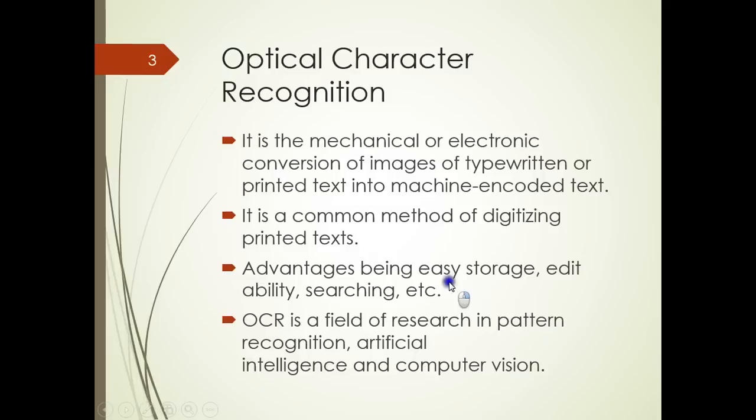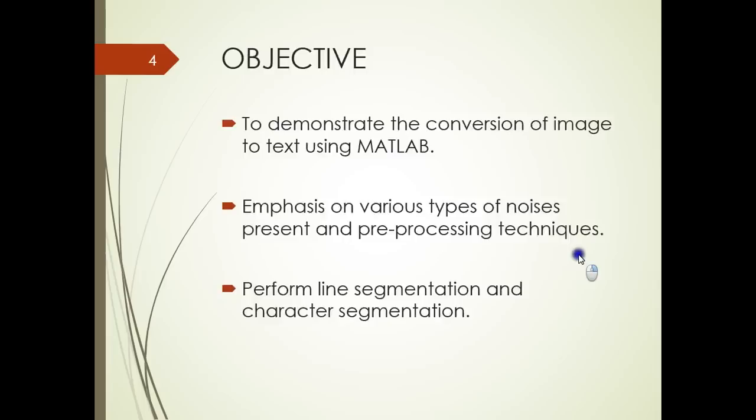What is OCR — optical character recognition? It is a mechanical or electronic conversion of images of typewritten or printed text into machine encoded text. This is a common method of digitizing printed text. Advantages being easy storage, retrievability, searching, etc. This makes it easier to compare between lots of text and store a huge amount of data in a very small space. Given these advantages, OCR is a very hot field of research in the field of pattern recognition, artificial intelligence, and computer vision.